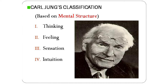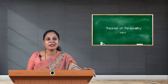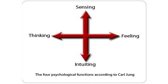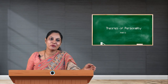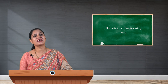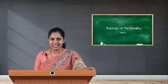Carl Jung said the mental structure of any human being has four major types: thinking type, feeling type, sensation type, and intuition type, which happen through the cognition of human beings. This picture clearly tells about the four characteristics — you sense, you feel, you intuit, and you think. These are the four activities done through the mind. His classification is of eight types — four major types each subdivided into introvert and extrovert — totaling eight types.